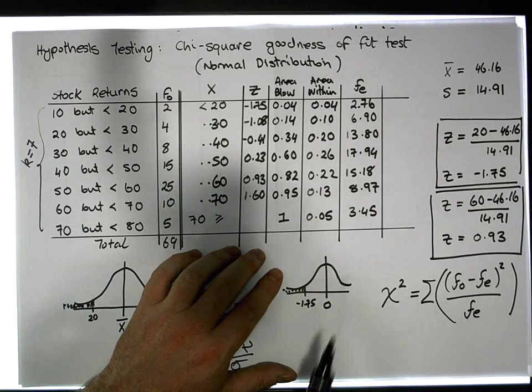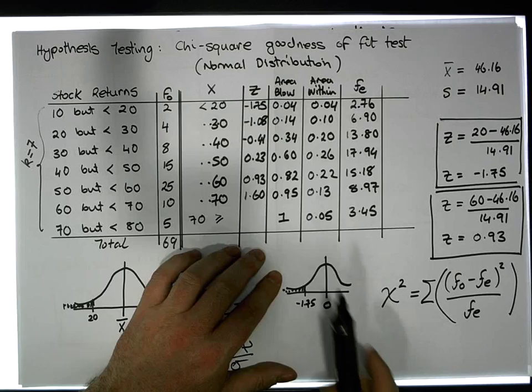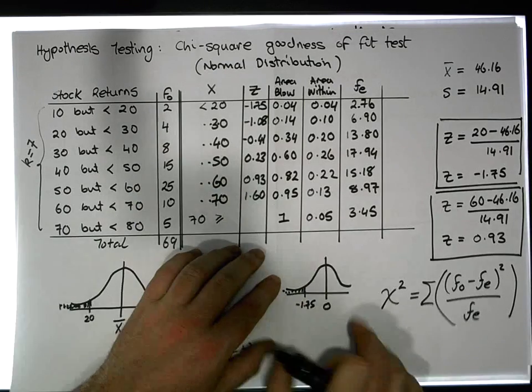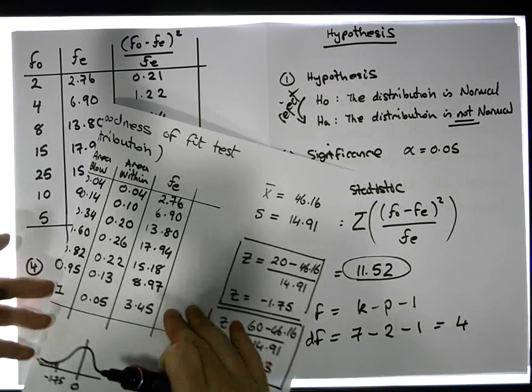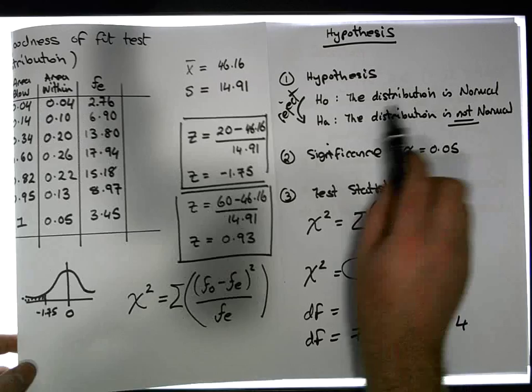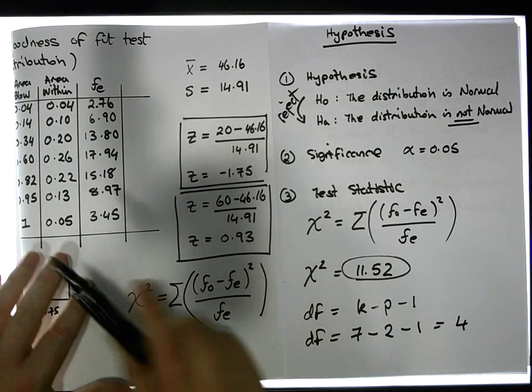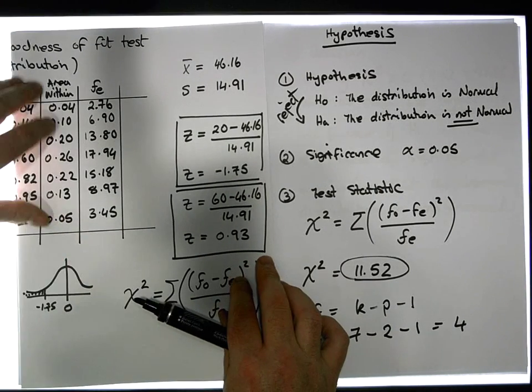The important thing here is that the expectation, which is what our null position was built from, is our expected frequencies we generated from a normal curve. In this case, we rejected that in favor of the alternative, so it's not normal.